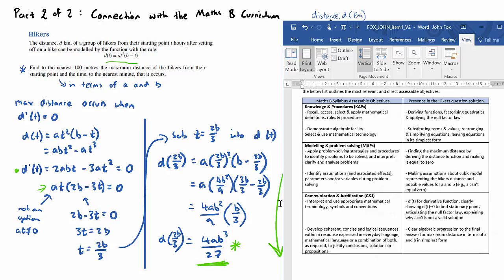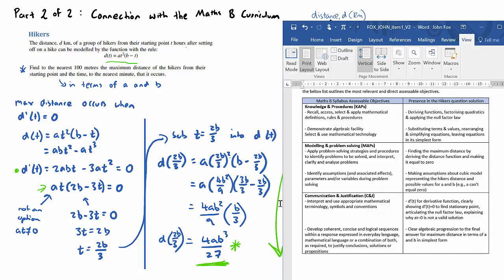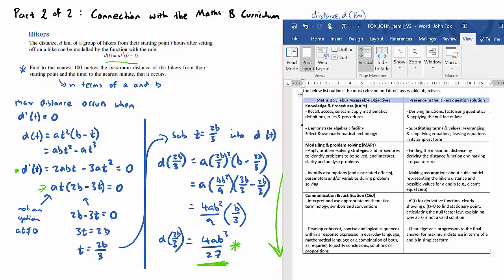So that's how to solve the question. In terms of how it relates to assessment criteria for Maths B, I've got a summary table here which is in my discussion paper for submission. So in the knowledge and procedures, the ability to recall, access, select and apply mathematical definitions, rules and procedures. So that's mainly when we're deriving the function and demonstrating algebraic facilities. So I touched on that, the importance of a sound understanding of algebraic techniques to get to our final simplest answer.